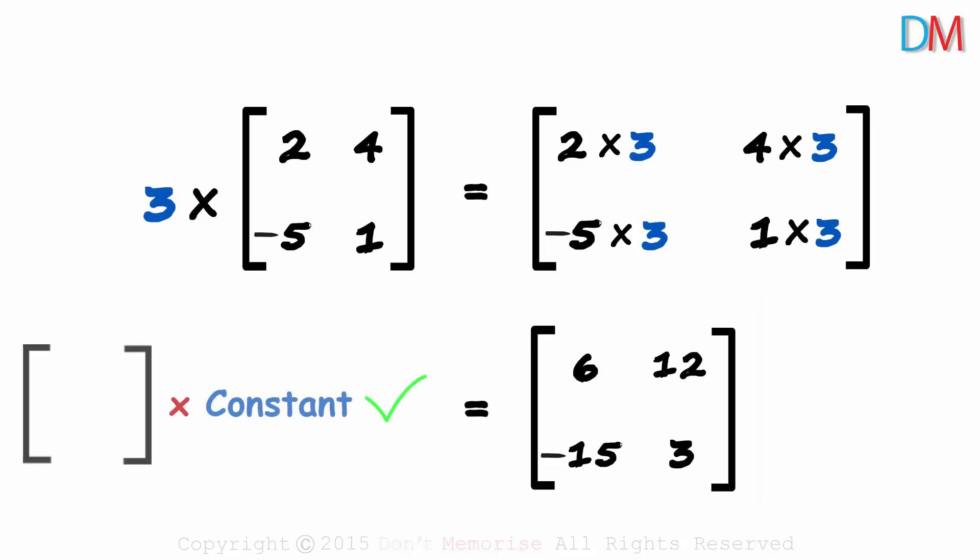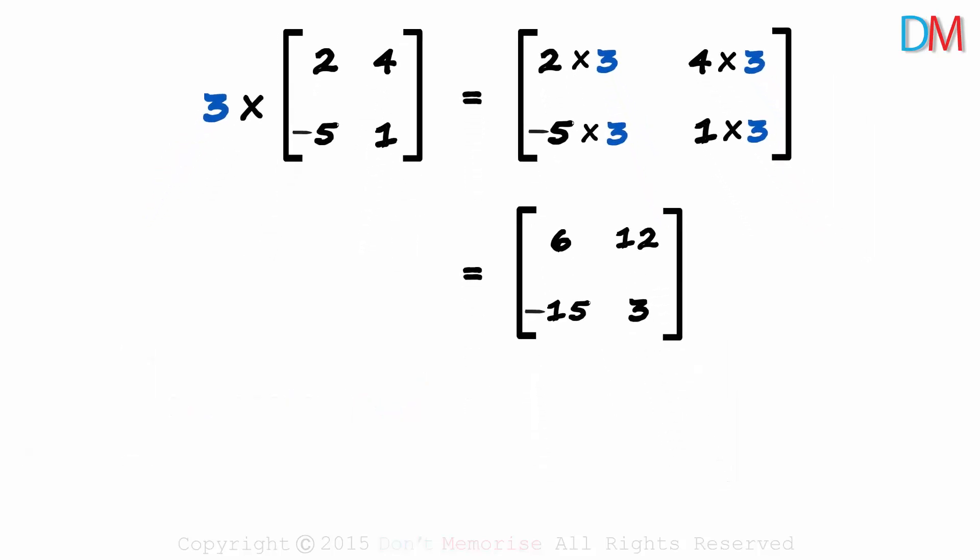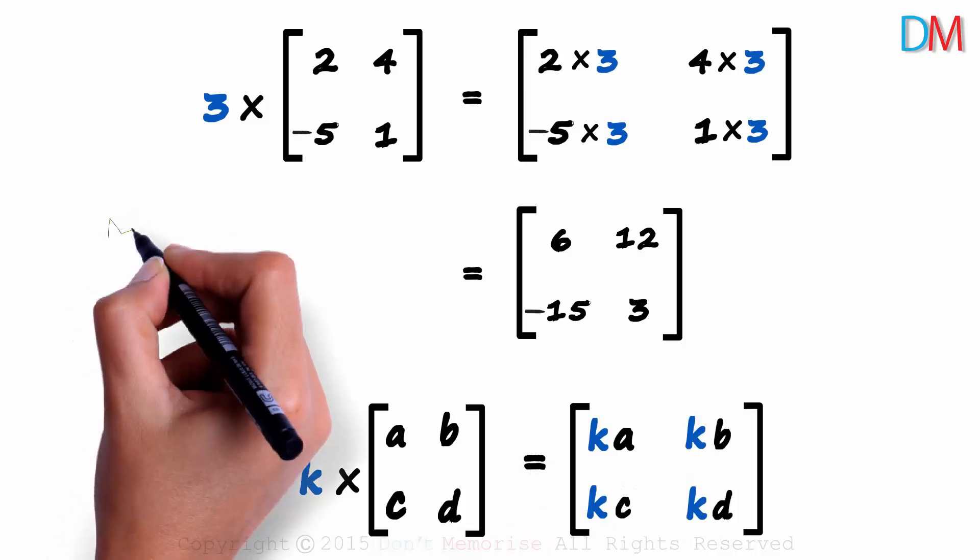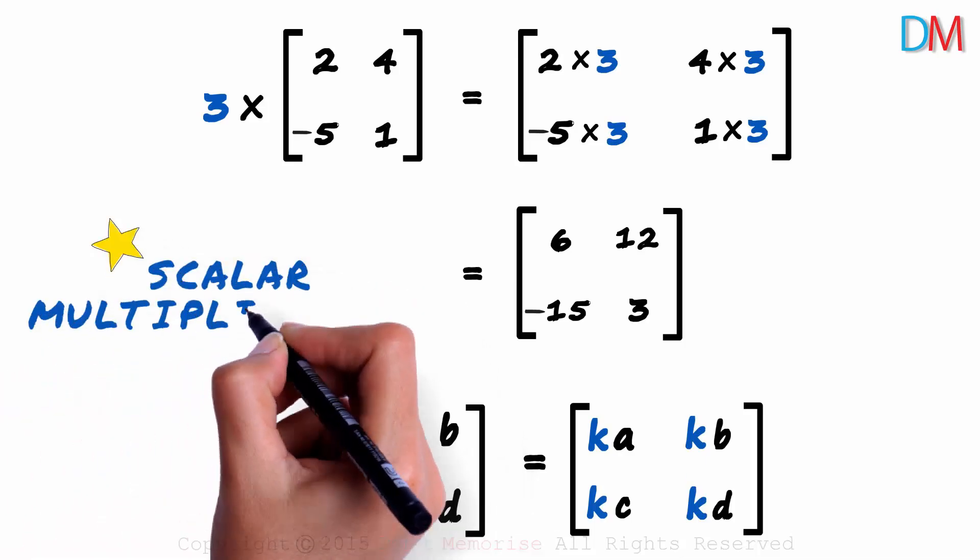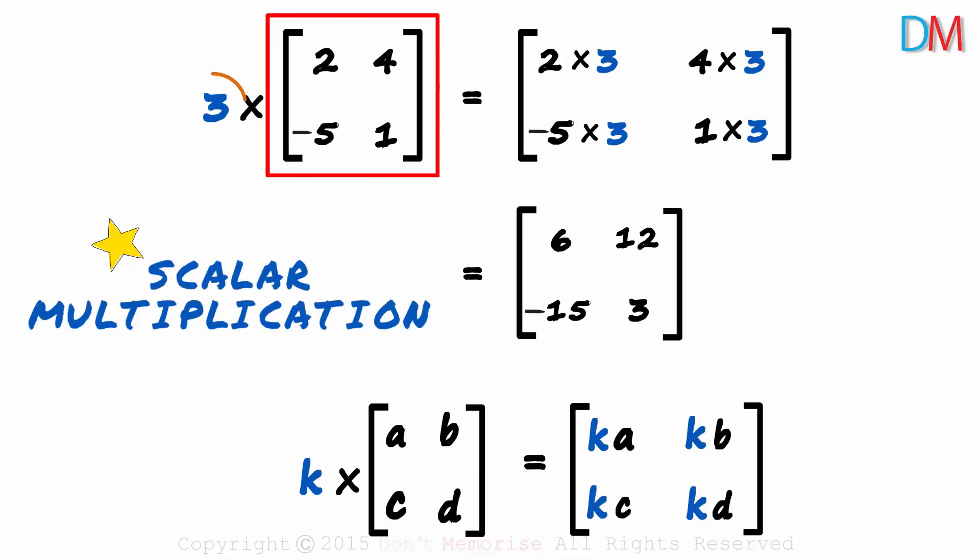This always works when a matrix is multiplied by a constant. If a matrix is multiplied by a constant k, then each of its elements are multiplied by k to get the resulting matrix. This is an important concept and it's called scalar multiplication. Multiplying a matrix with a number is called scalar multiplication.